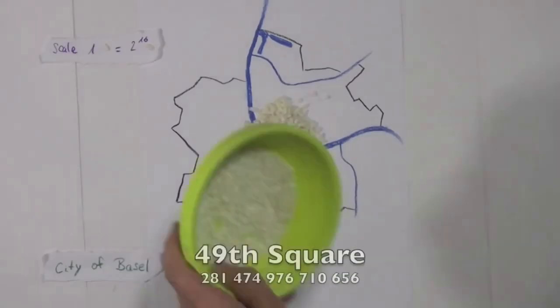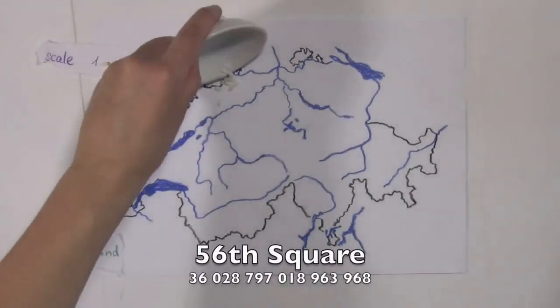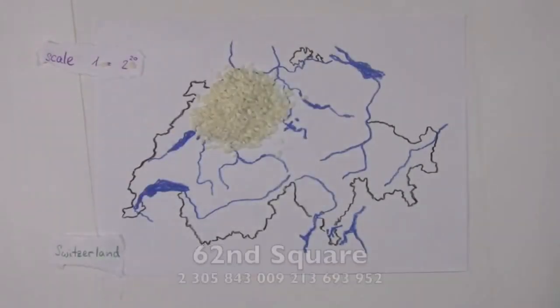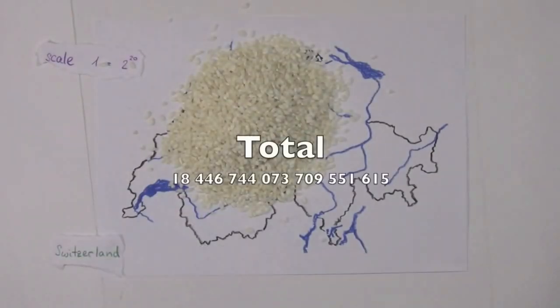Interestingly, the number of grains on the entire chessboard is smaller than the 8th Dedekind number. This just goes to show the magnitude of the numbers involved in solving these mathematical puzzles.